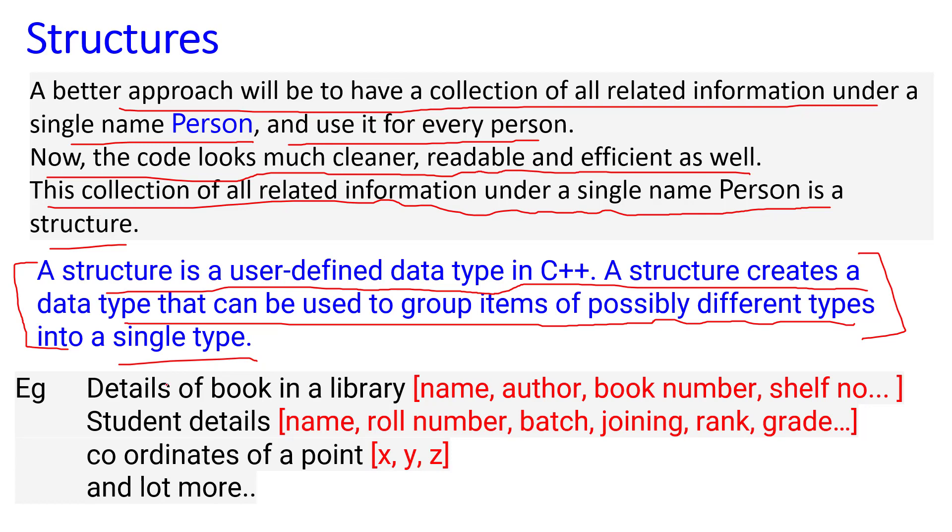As another example, details of books in a library: a book will have a name, book number, shelf number, etc. A student will have name, roll number, batch, joining, rank, grade. Coordinates will have x, y, z different coordinate values, and much more. These require structures for perfect organization of data.